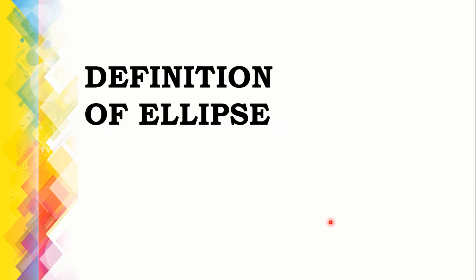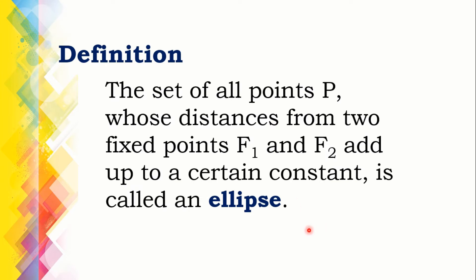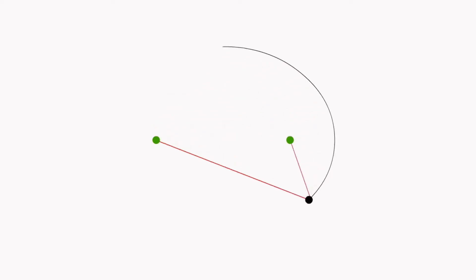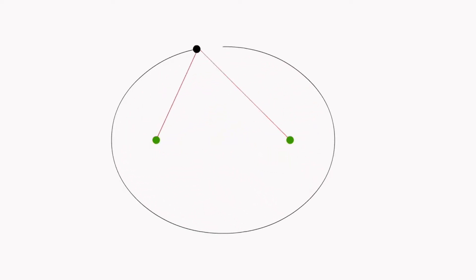Let's have the definition of ellipse. An ellipse is a set of all points P whose distances from two fixed points F1 and F2 add up to a certain constant. A video clip will clearly illustrate the definition of ellipse. First, when you have two points called the foci, let's connect a string, and when we extend the string around the foci, we create an ellipse.